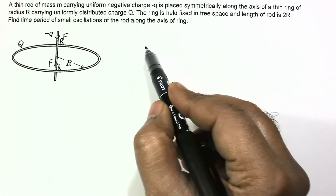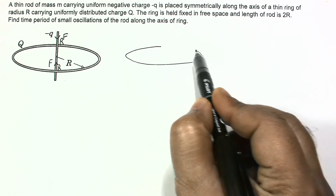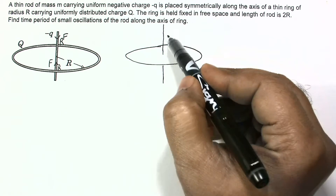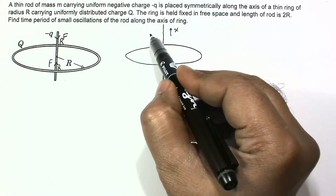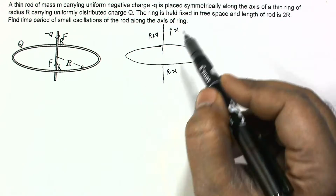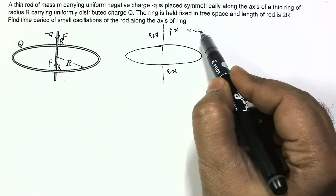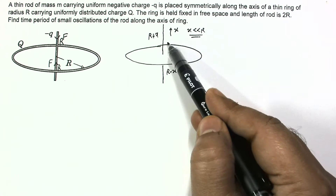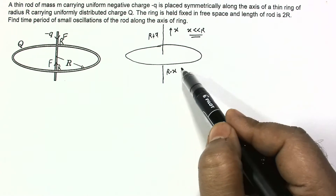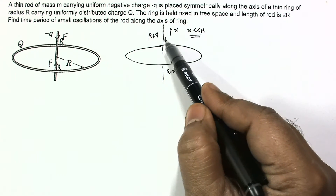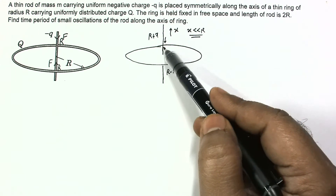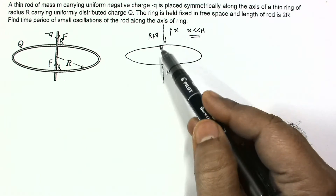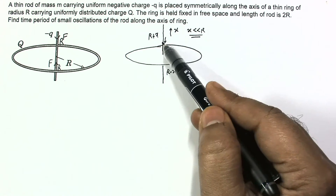If we disturb this equilibrium and the rod slightly moves, then one part increases and the other part decreases. Suppose the rod moves by x, so the upper length becomes r plus x and the lower length becomes r minus x. Since x is very small compared to r, the upper part has more rod in the attractive field, so the downward force increases and the upward force decreases. The net force is downward, directed toward the mean position — this confirms restoring force behavior.